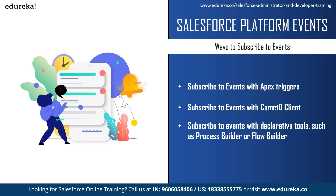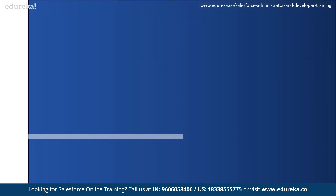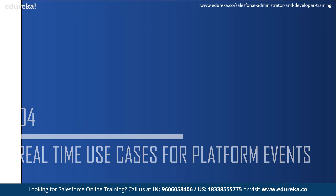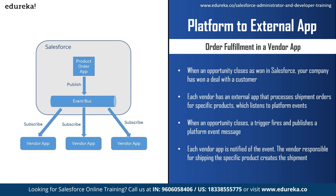Publishers and subscribers communicate with each other through platform events, and one or more subscribers can listen to the same event and carry out actions. In the first real-time use case scenario, an app in Salesforce notifies an external or third-party application of a product shipment order. When an opportunity closes as won in Salesforce, you can publish the event message and the external application will listen to the platform event. A trigger fires and publishes the platform event message, and each vendor app is notified. The vendor responsible for shipping the specific product then makes the shipment.